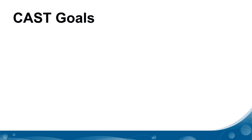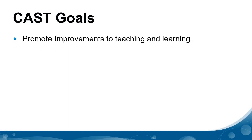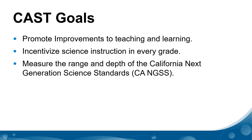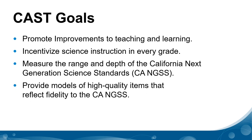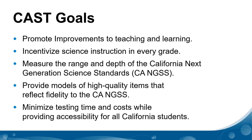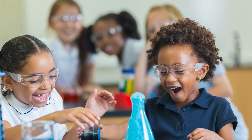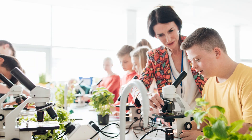The goals of CAST assessment are to promote improvements to teaching and learning, incentivize science instruction in every grade, measure the range and depth of the California NGSS, provide models of high quality items that reflect fidelity to the California NGSS, and minimize testing time and costs while providing accessibility for all California students. The second goal highlights that we want to incentivize science instruction in every grade — not just in the tested grades of 5, 8, and high school.